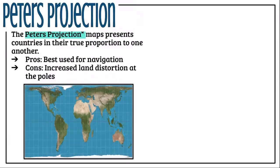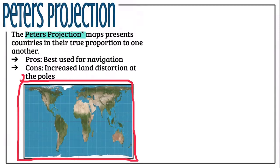Let's look at some other options for maps, because not all maps use the Mercator projection. There's also the Peters projection. This represents countries in their true proportion to one another, which is good for navigation because it has a rectangle shape and flattens the earth. It shows true size, but land is distorted when it comes to shape.